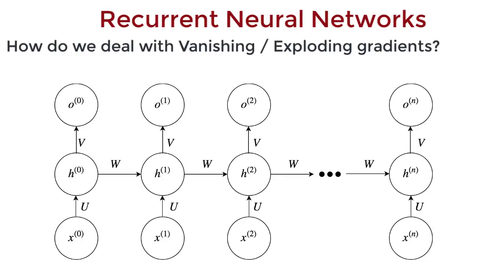A modification of the leaky hidden units is the gated recurrent networks. Instead of manually assigning a constant value alpha to determine what to retain, we introduce a set of parameters, one for every time step.